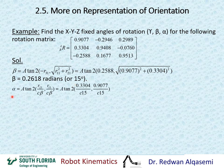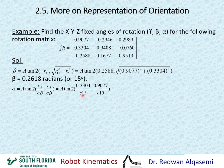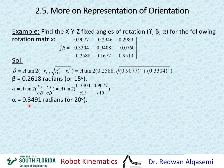For alpha: use alpha = atan2(R21/cos(beta), R11/cos(beta)). R21 is known, and beta = 15°, so cos(beta) = cos(15°). R11 = 0.9077. Evaluating this gives alpha = 0.3491 radians, which is 20 degrees.